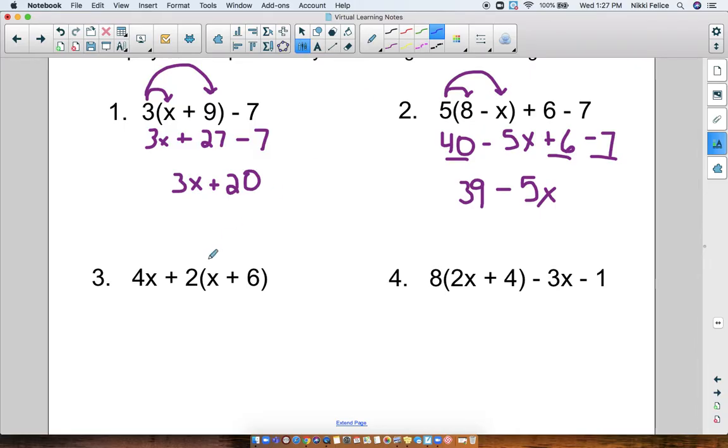Number 3, I have 4x plus 2 times x plus 6. So this one's a little tricky because the 4x was on the left instead of the right. So when we distribute for this problem, the number that we're distributing is 2, because 2 is the number right outside the parentheses, not the 4x. We bring down the 4x. We don't distribute with it. So then I'm going to do 2 times x is 2x. And then 2 times 6 is 12. So now I have 4x plus 2x plus 12. This is a plus sign here.